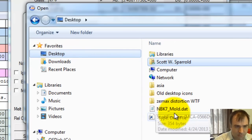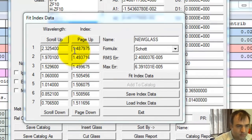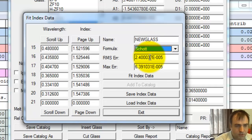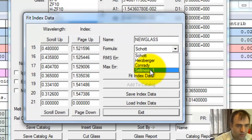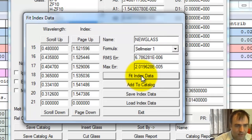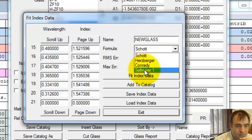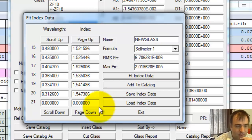So let's load this index data. It's on my desktop. NBK7 mold. So there it is, 20 index values. Let's try Herzberger Sellmeier. Fit index data. It's saying an RMS error out in the sixth decimal place and a max error in the fifth decimal place. Let's try Schott and see what it does. Schott isn't as good, the RMS is actually in the fifth. So this Sellmeier is fitting a little better. Let's do that. Add to catalog.